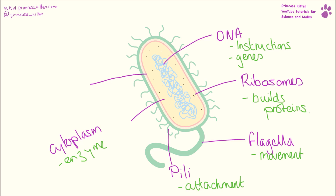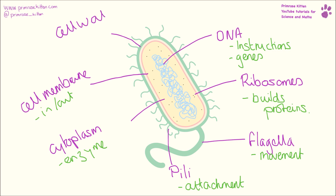We have the cell membrane, which is responsible for letting stuff in and out of the cell. Anything that wants to get into the cell or out of the cell — the cell membrane controls it all. And then we have the cell wall, which is responsible for keeping the shape of the cell in place and keeping the cell rigid and in a fixed shape.